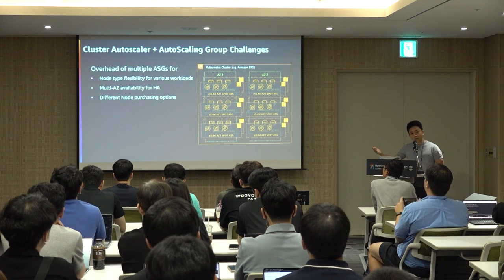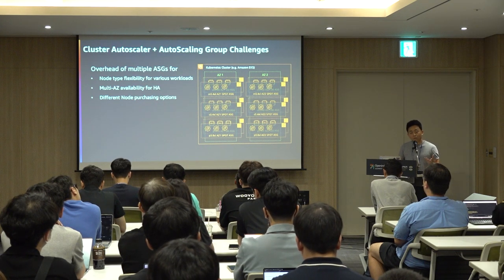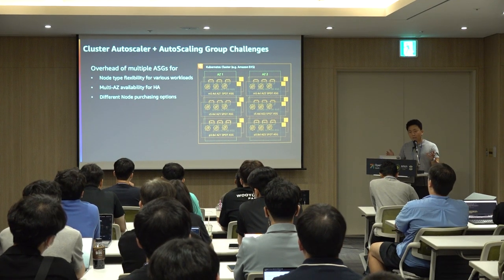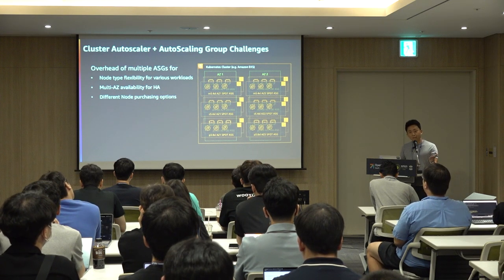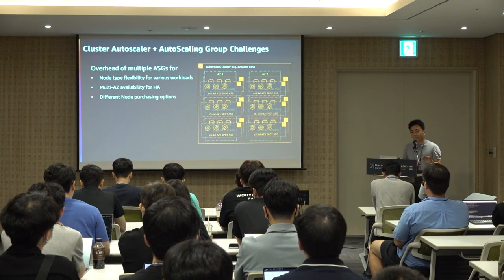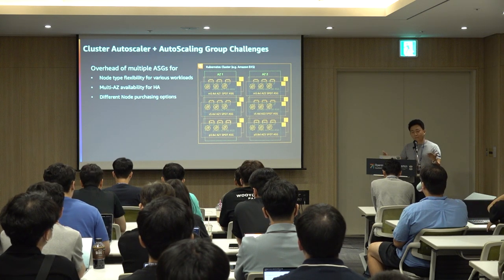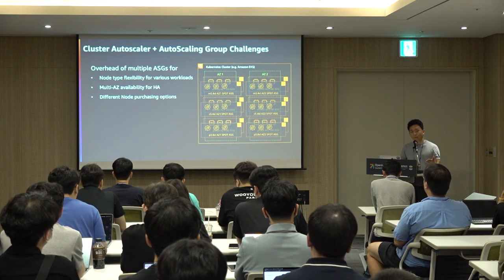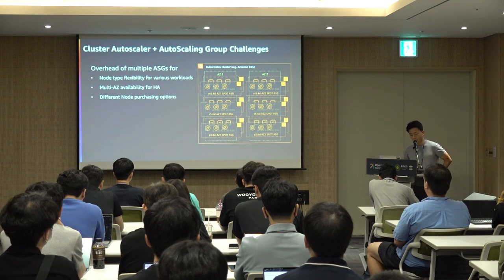At large scale, you may have many workloads requiring different compute resources. To achieve high availability, you may add additional auto-scaling groups per AZ. Cloud environments also have different purchasing options — on-demand, where you pay for what you use, or spot instances, which are spare capacity with up to 90% discount but can be terminated. To fully leverage all options in cloud, you end up creating multiple auto-scaling groups.